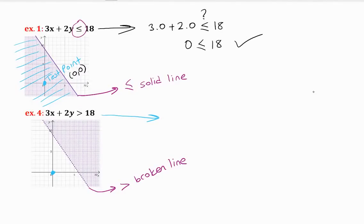Let me show you why. This test point, 3 multiplied by 0 plus 2 multiplied by 0, is not greater than 18. We are checking with a question mark. This side will be 0. 0 is not greater than 18, so this is not satisfied.